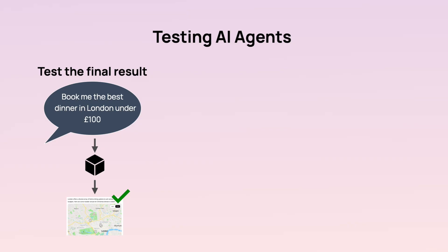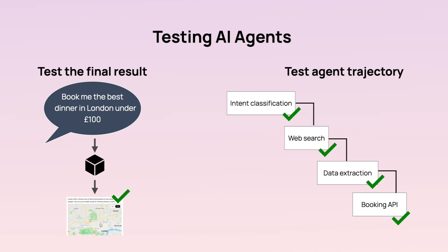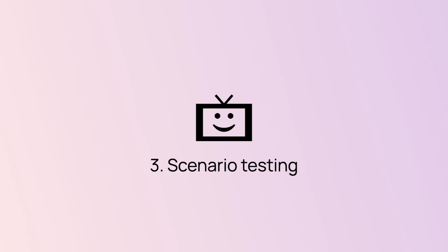The second idea is to test just the final outcome. You can treat your AI agent as a black box and see if the final result is what you expect — for example, if the user asked to make a booking, did the agent complete it? Separately, you can test that the agent trajectory was correct: you may know the expected sequence of steps or tool calls needed, and then verify that this sequence was actually followed.